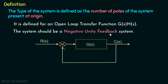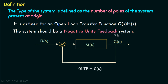In case of a unity feedback when H(s) is equal to 1, we can write the open loop transfer function equal to G(s). So the type of system is the number of poles of the open loop transfer function G(s) present at the origin, and the system should be a negative unity feedback system. We will now discuss the various types of systems in control systems.